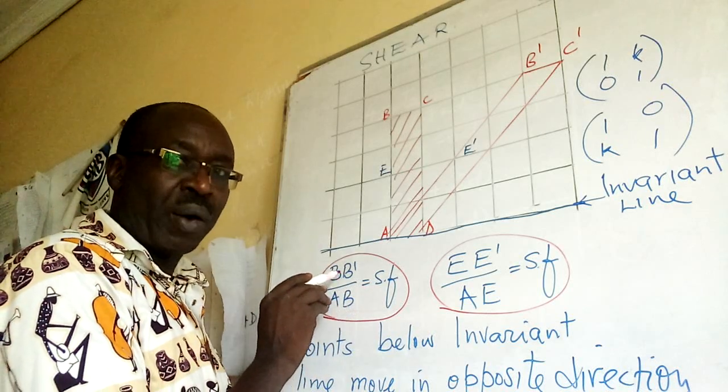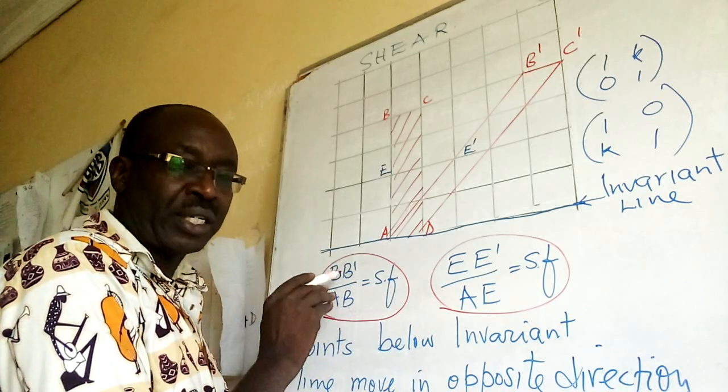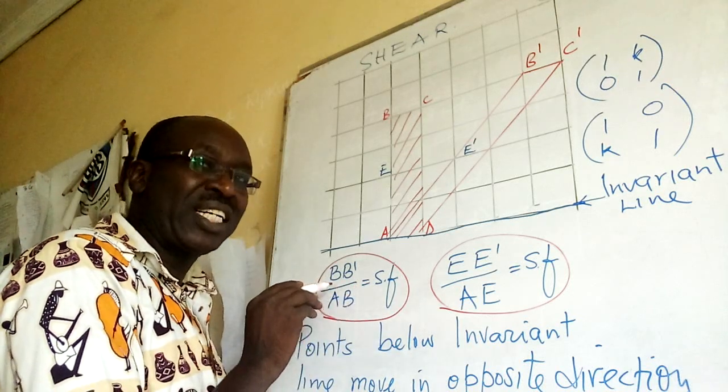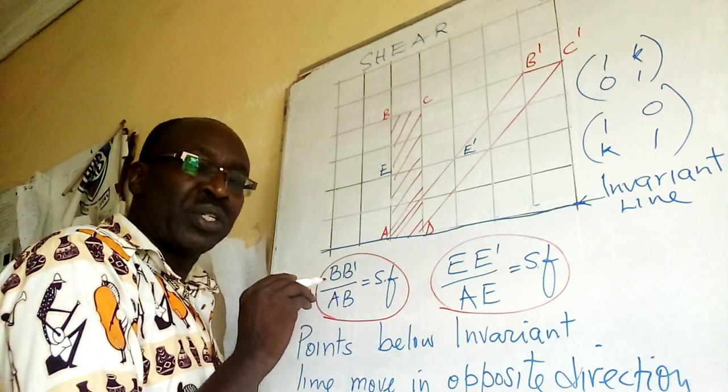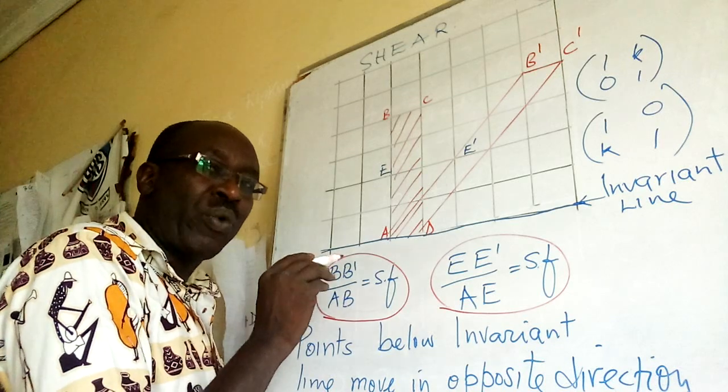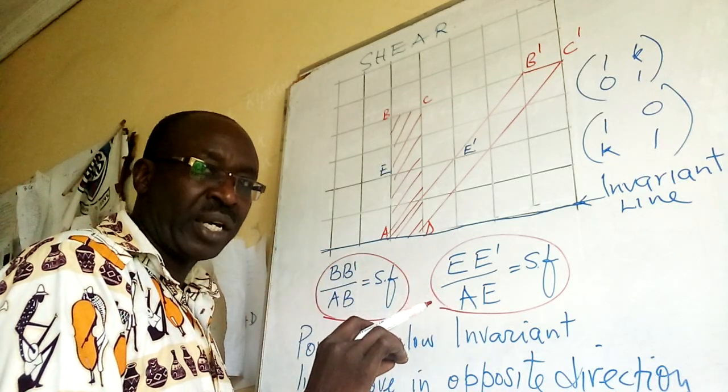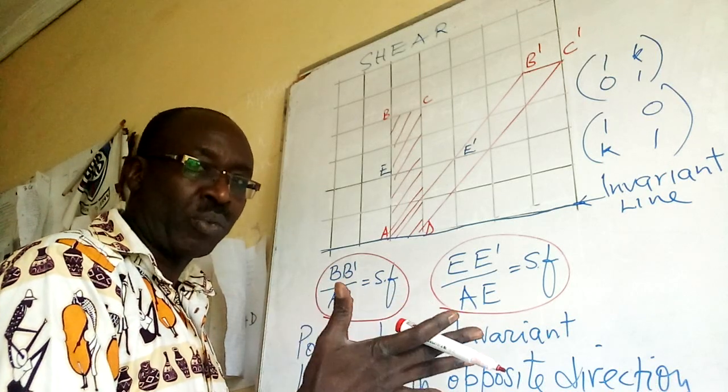If you want to understand, you concentrate: movement of a point parallel to the invariant line divided by its vertical distance. So that point must be away from invariant line by some magnitude, maybe two boxes, three boxes, four boxes.